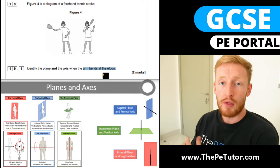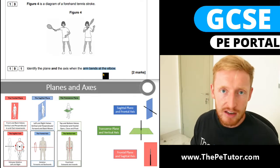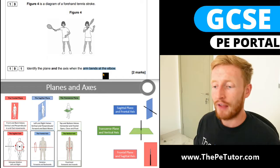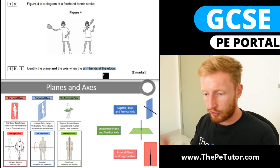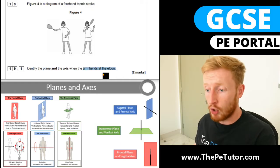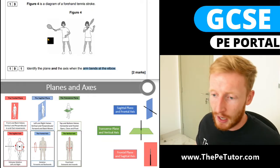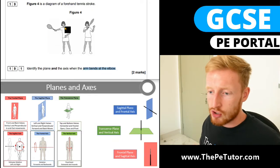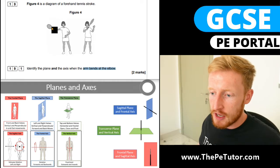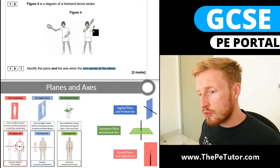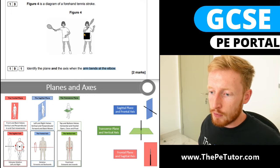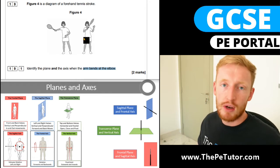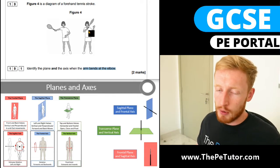Movement at the elbow: we know that at the elbow we've got a hinge joint, so only two actions can occur — flexion and extension. In order to work out the plane and axis, we assess whether it's flexion or extension. If this person is going from preparation through to the execution phase, we've got an extended joint to start with, followed by a decreased angle, so we know that flexion is occurring at the elbow.